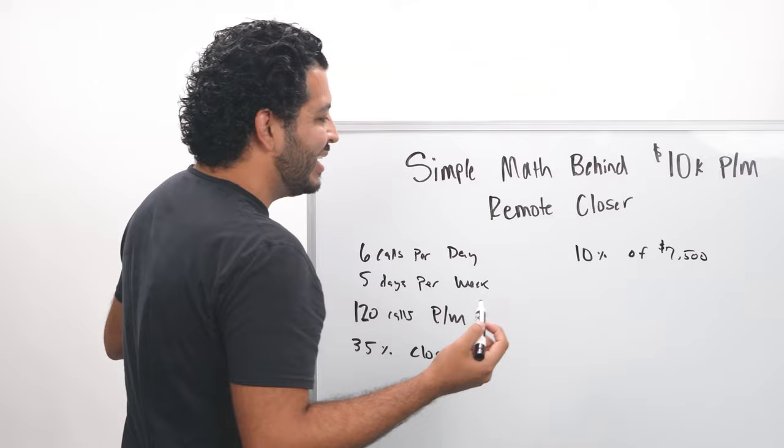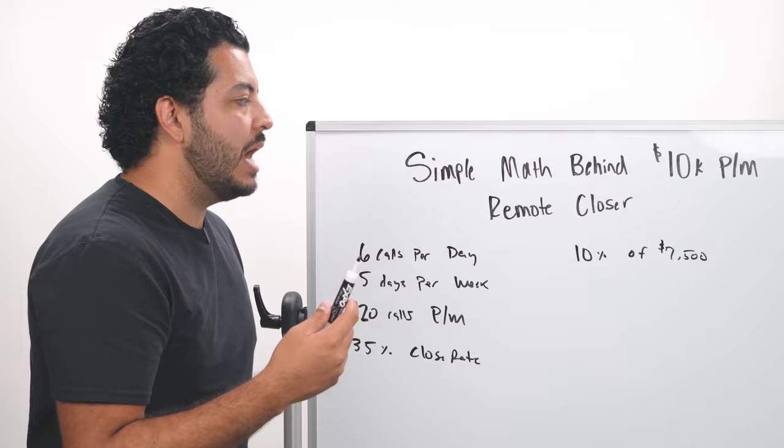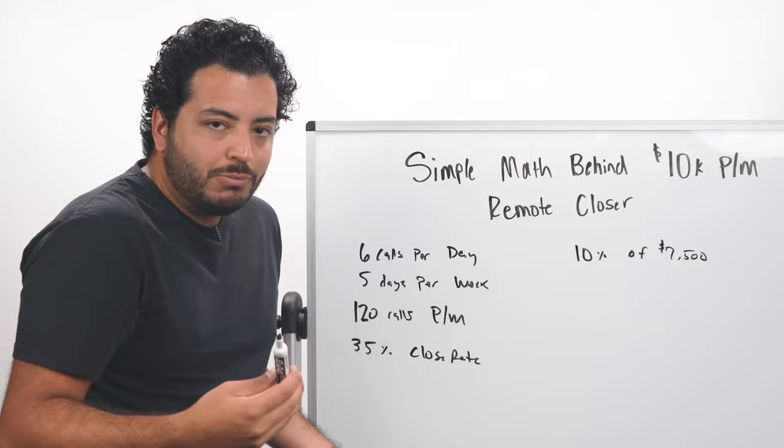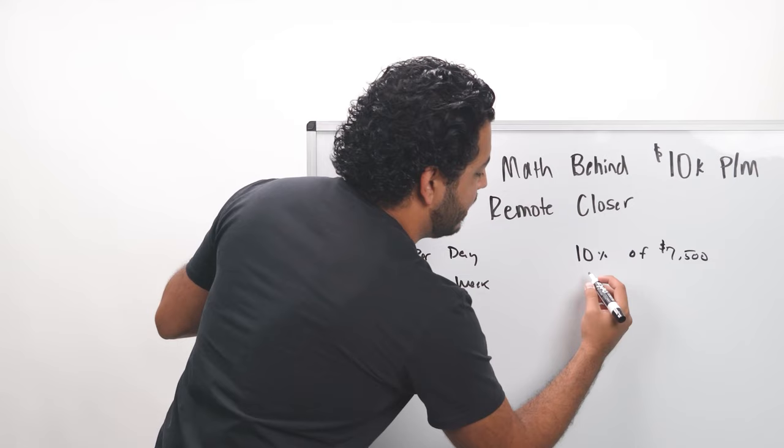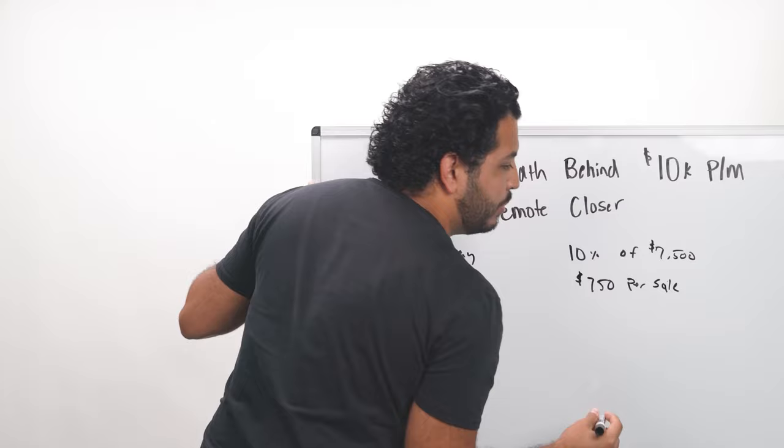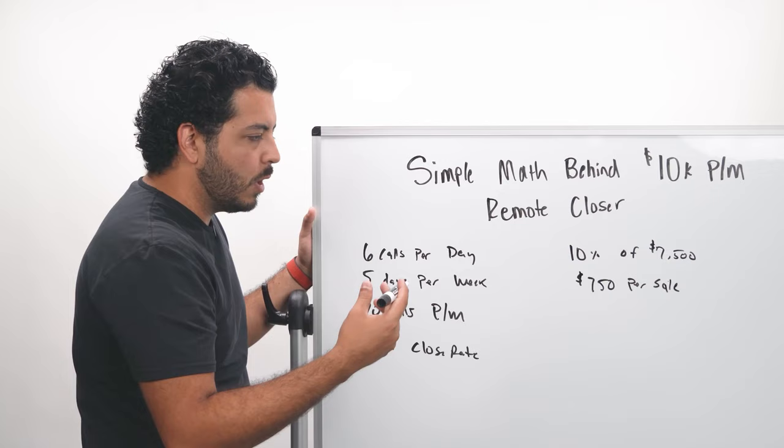One of the offers that I've sold has been $8,800. There's one that was about $9,800. So it goes up and down. So keep that in mind when you are starting within remote closing. But let's say you're closing 10% of the $7,500 offer. So that means that you're going to make $750 per sale as opposed to the $500. So you're making about $250 more per sale.